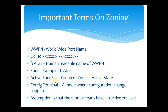Next is active zone set. A group of zones which are in active state — in every fabric you will have one active zone set. Whatever zones are inside the active zone set are effective. Any zone which is not part of the active zone set will not be in effective state, and communication will not happen between the FC alias members which are part of that zone.